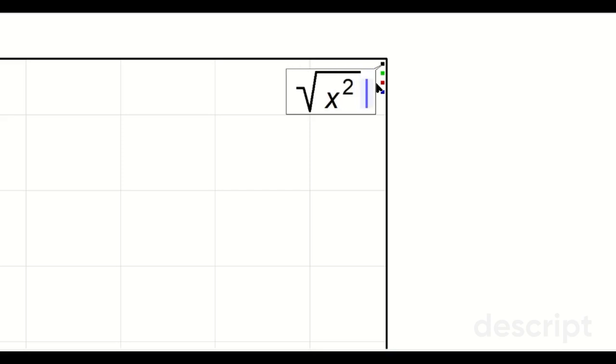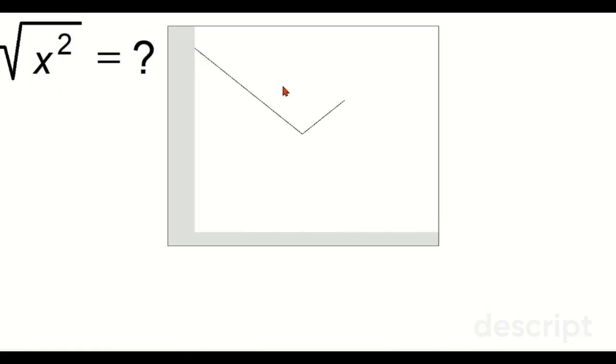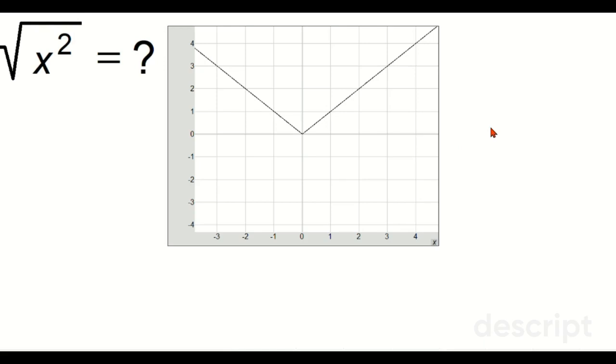That's going to produce a very specific shape, and hopefully this shape will be familiar to you. So let's zoom back out here. Now look, that's a basic V shape. So hopefully you recognize that as the absolute value of x.